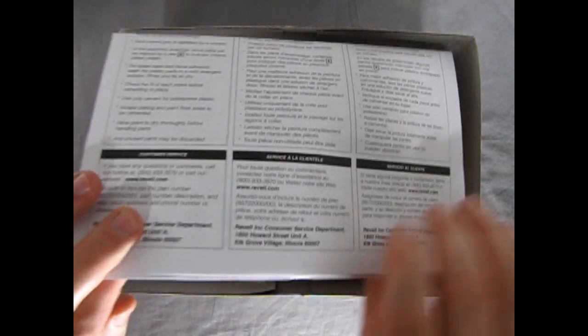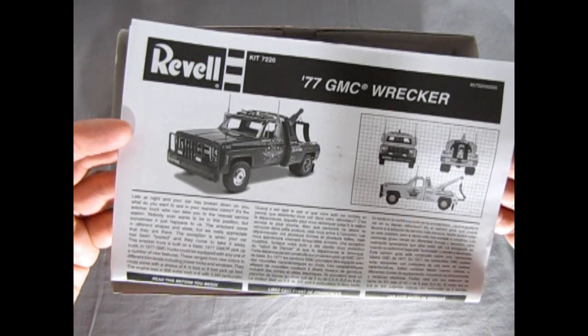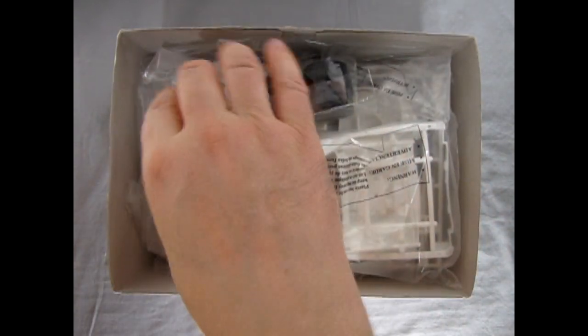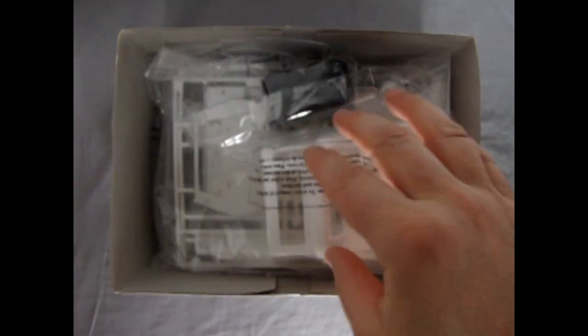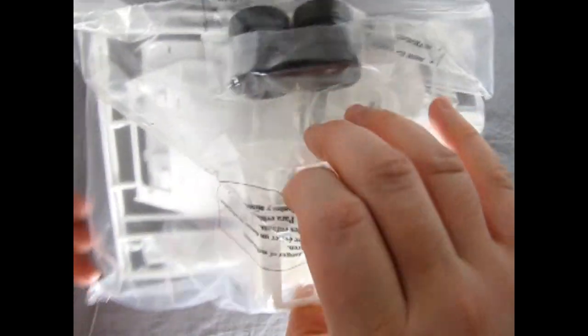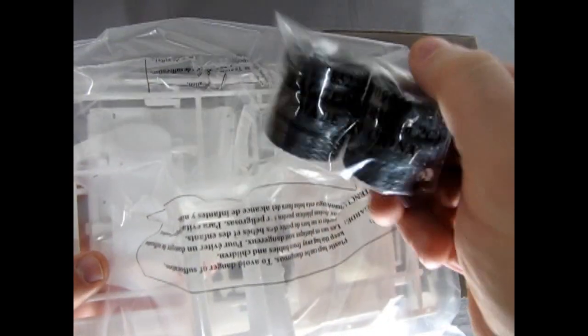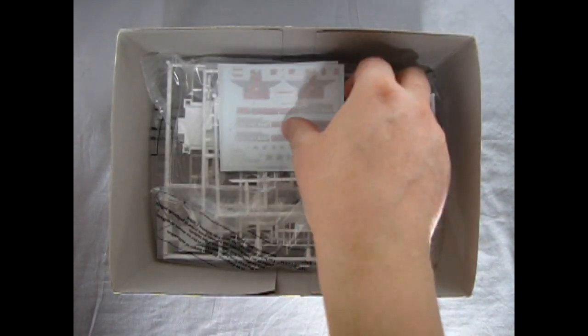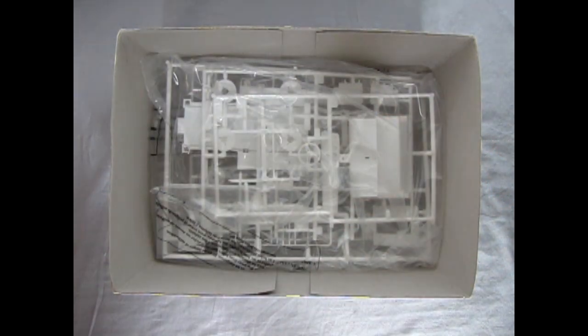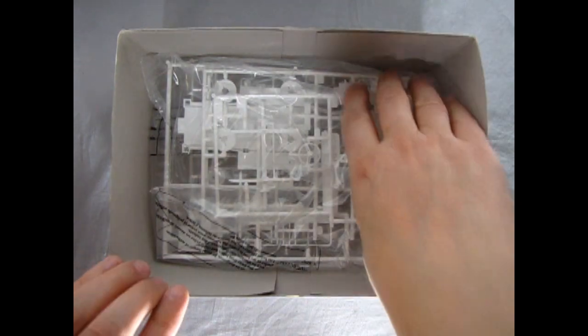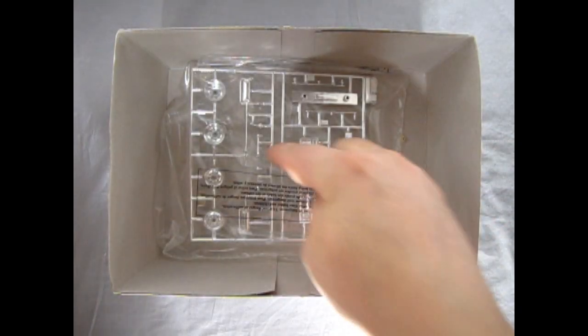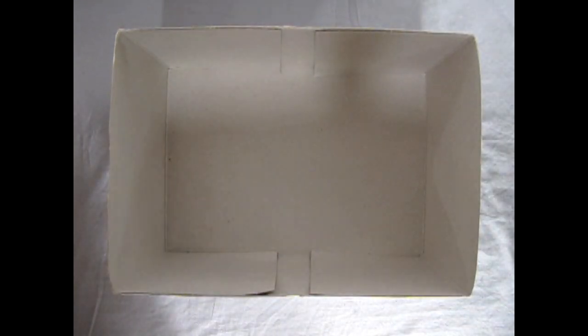So right away we're greeted with our instruction sheet which again looks quite nice. Here we have our glass in a nice bag so it's protected from scratches. Then we have our tires over here as well as our white plastic components for the top. There's our decal sheet which we will take a look at at the end of the video and another bag full of white plastic components. Then we've got our chrome down here and that concludes the look of that.